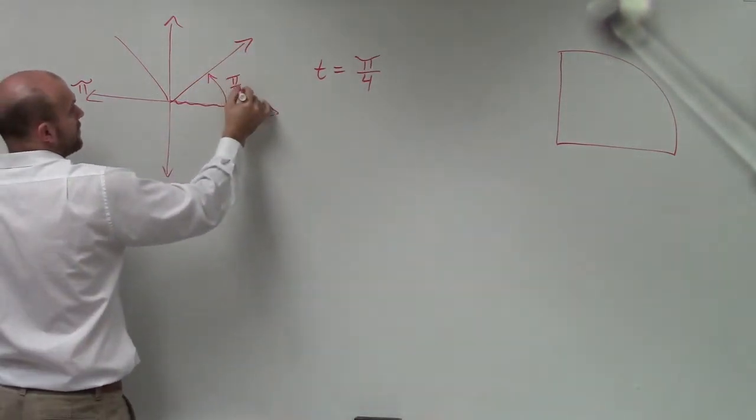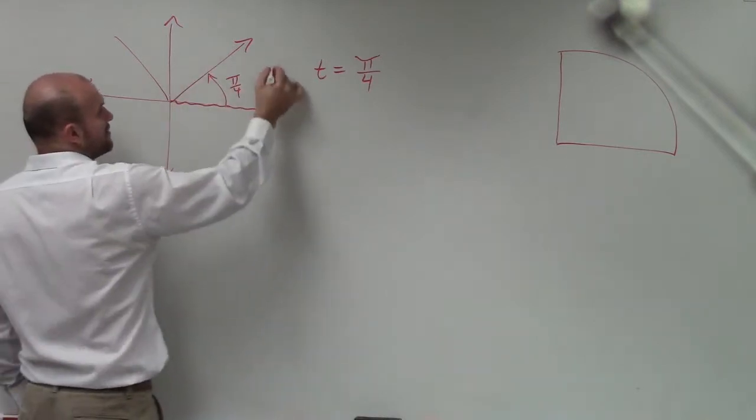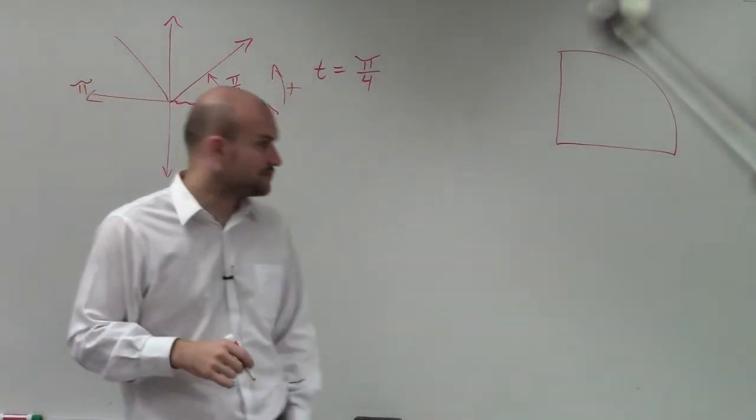Right? It's π over 4, that's the rotation. Well, that's the initial side, that's your terminal side. Remember, whenever you're going counterclockwise, that's in the positive direction.